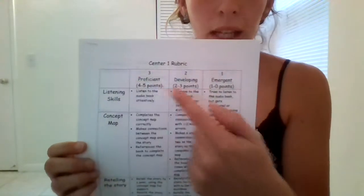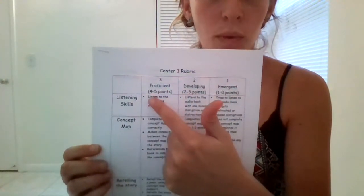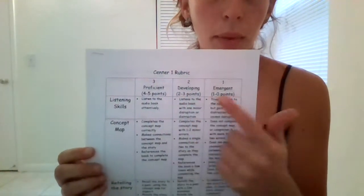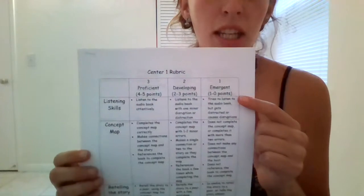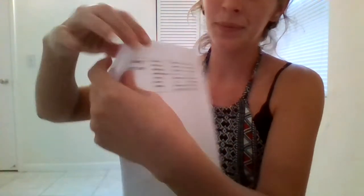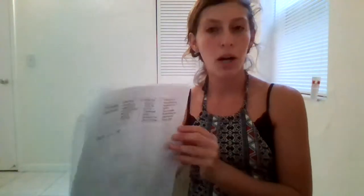The last aspect of the center is the rubric. For center one's rubric, I chose to have three levels of proficiency. The first is proficient, worth four to five points. The second is developing, two to three points. And emergent, zero to one points. Each criteria is going to be worth five points, equaling a total of 20. There will be room for comments at the bottom.